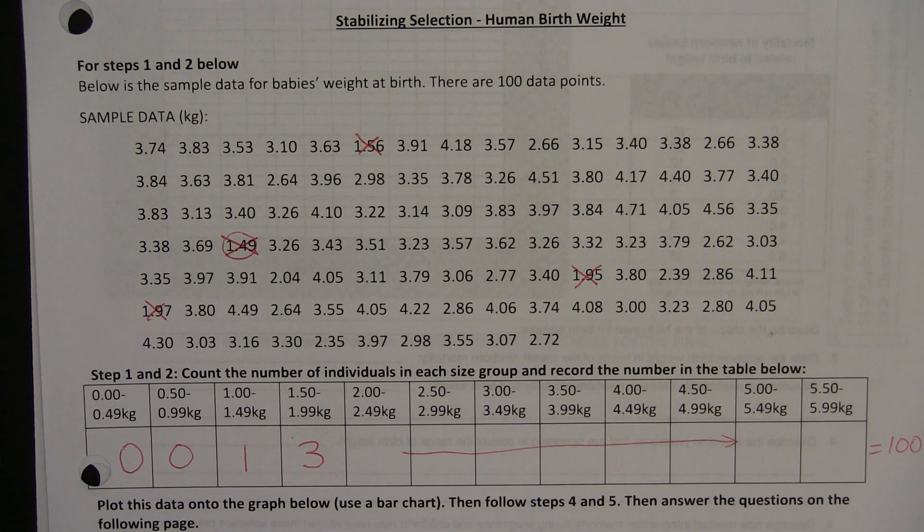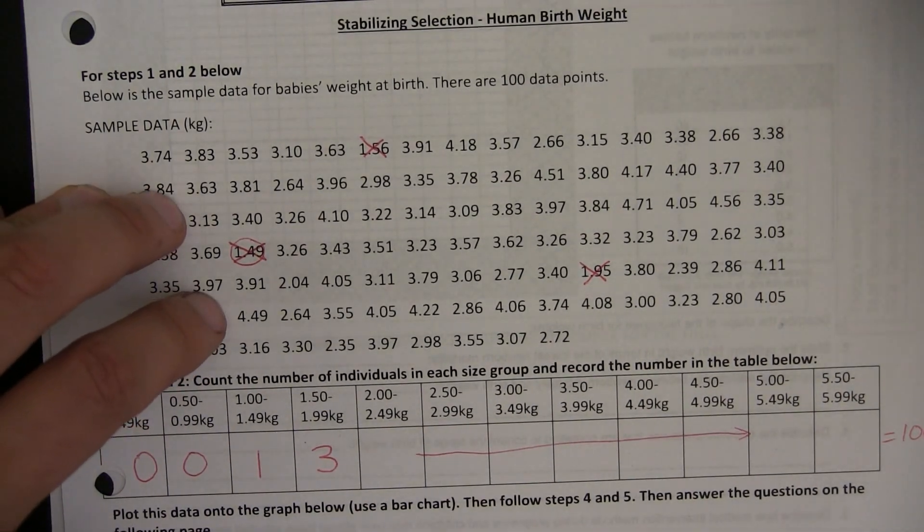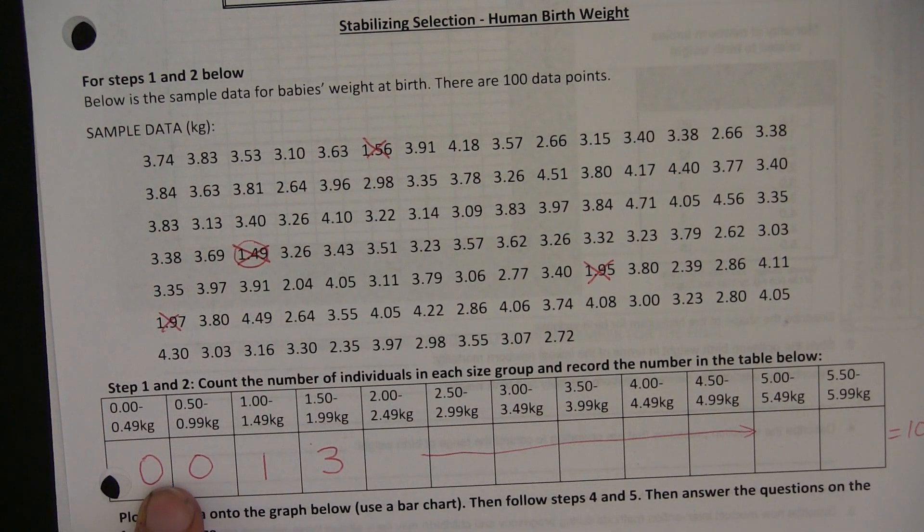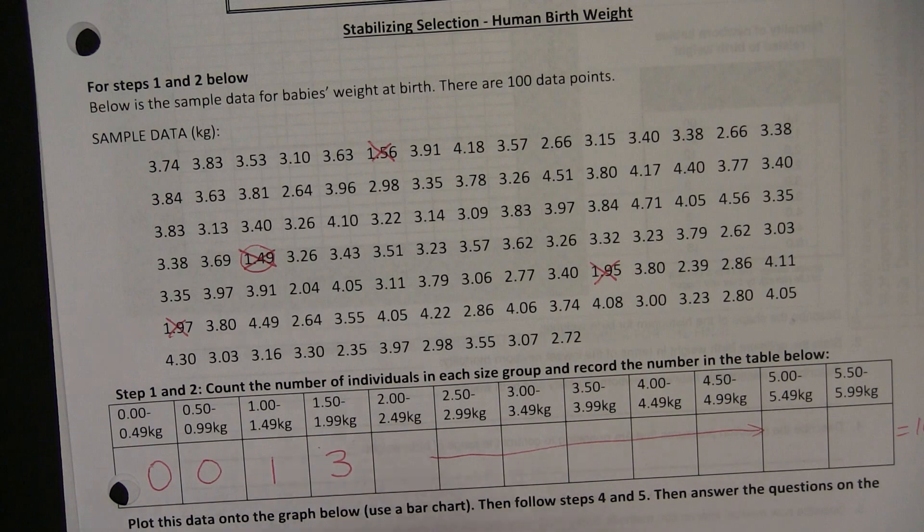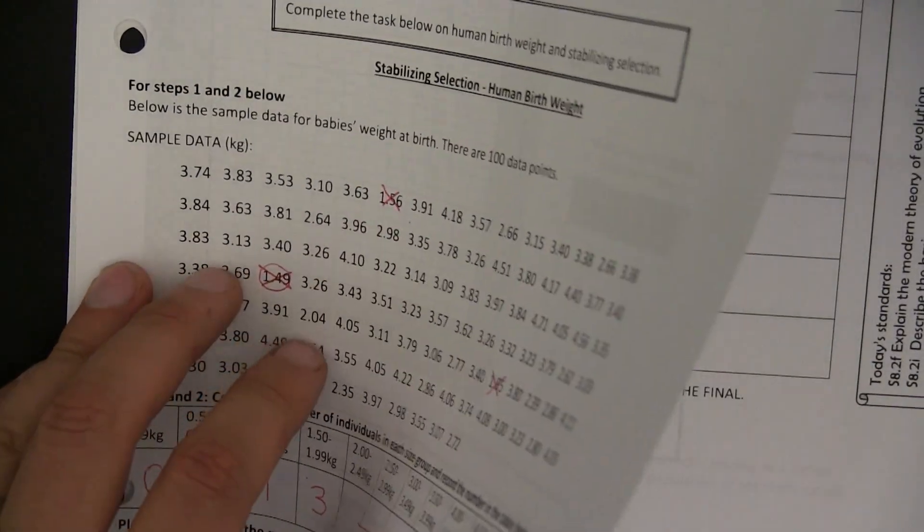The next thing that you're going to be doing as part of your homework is plotting this data in a frequency histogram, which is over on the next page. So my first four values were 0, 0, 1, and 3. You're going to be plotting the whole lot. But I'm just going to show you how to do the first few.